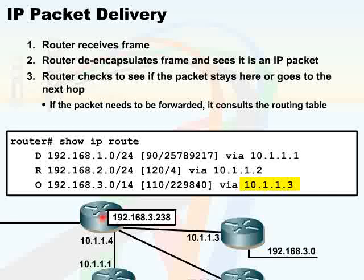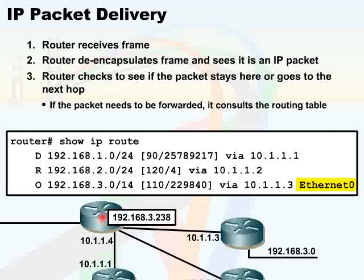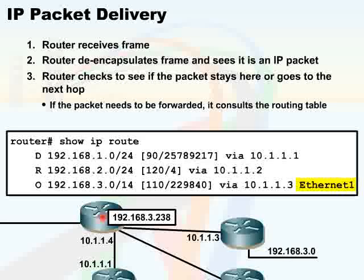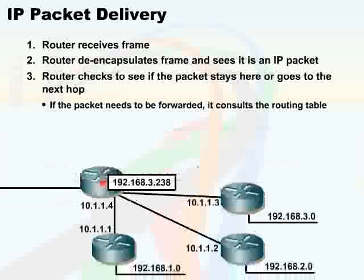The receiving router does not really care how many routers the packet must go through — it only needs to point to the next hop. Something that you do not see in this example of the routing table shown here is that at the end of the next hop address, it will also show the output interface. The output interface is identified so that the router knows how to get out to 10.1.1.3. It might be via Fast Ethernet 0 or Fast Ethernet 1.